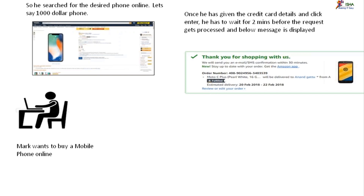Once he clicked on Buy Now, it took two minutes for the website to show the confirmation message — 'Thank you for shopping, your order has been booked, here is your order number.' After entering the credit card details, the CVV, the OTP, everything, he clicked Buy Now. He was expecting that message and he got it, but it took two minutes. In those two minutes, he's thinking: 'I've given my credit card for a thousand dollar phone and it's still processing — should I cancel, should I go back, should I close the window?'